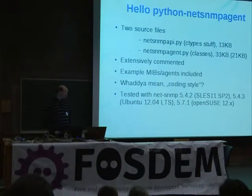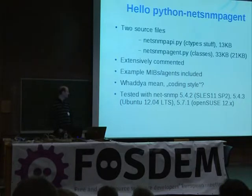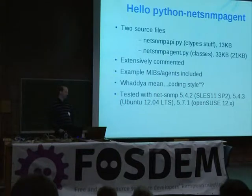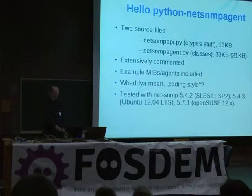I've got example MIBs and agents included. The coding style is not particularly PEP8 or whatever the Python coding style proposal is — it's more or less my own coding style, but it's consistent. It's been tested with both 5.4 and 5.7 versions of Net-SNMP, for the simple reason that it was targeted at enterprise Linux distributions — SUSE and Ubuntu — and they're still shipping 5.4, so I have to take care of those as well.